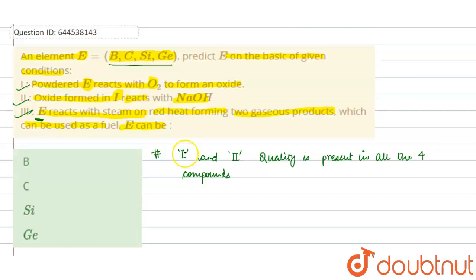So third corresponds to water gas formation, and this quality is possessed by carbon only. So your E compound must be carbon, that is your C option is the correct option.